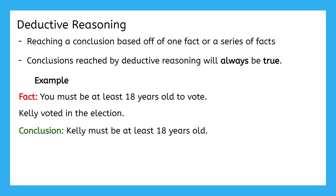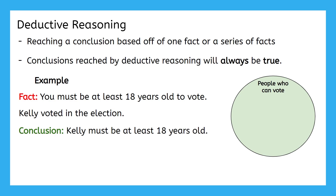We all have different ways that help us make sense of information. I want to show you how we can take this same information and reframe it from verbal sentences to a more visual representation. Let's say that this big circle represents all of the people who can vote. We know that everyone in this circle has to be at least 18 years old. Since Kelly voted, she must be inside this circle. Let's represent Kelly with this little orange circle here. Since she's part of the group that can vote, all of the things that are true about voters must also be true about Kelly. Therefore, Kelly must be at least 18 years old too.